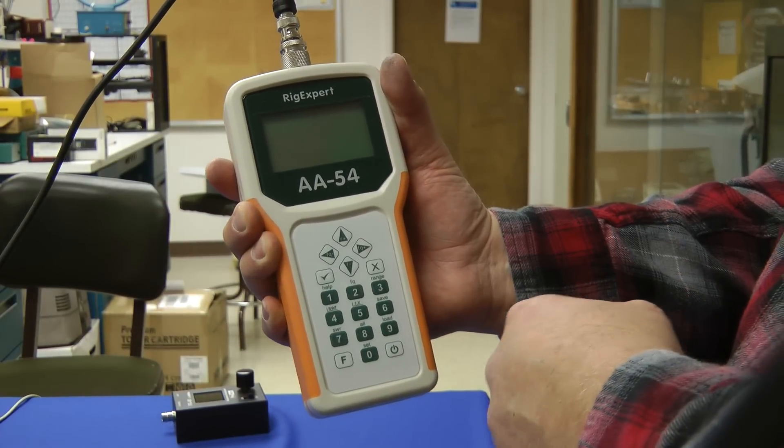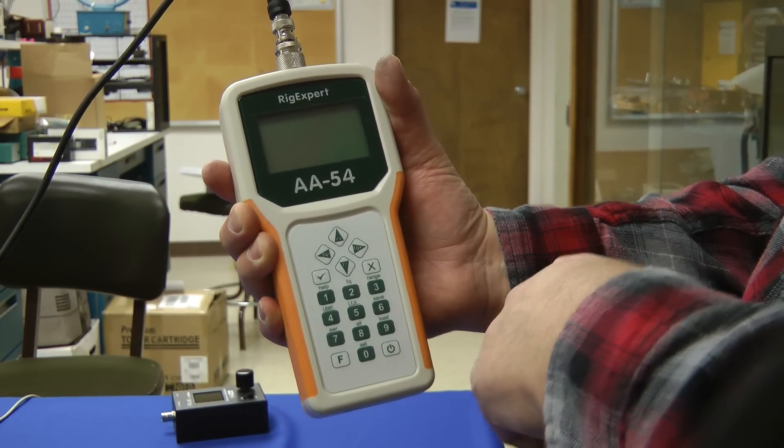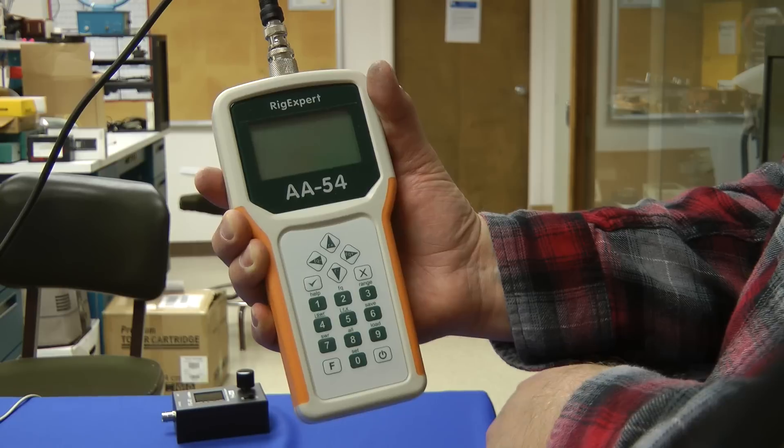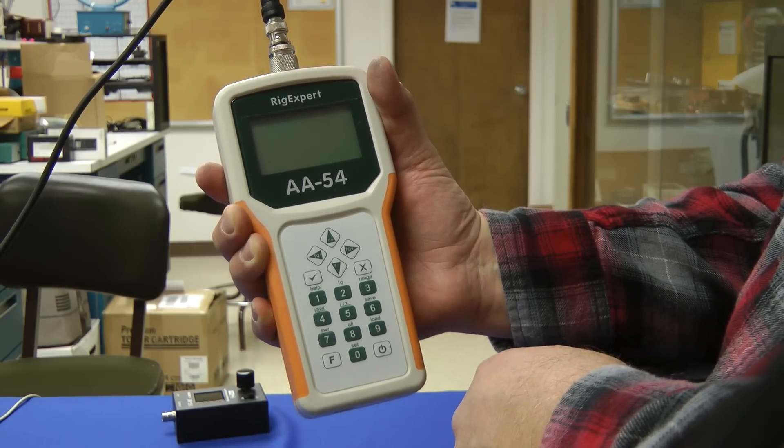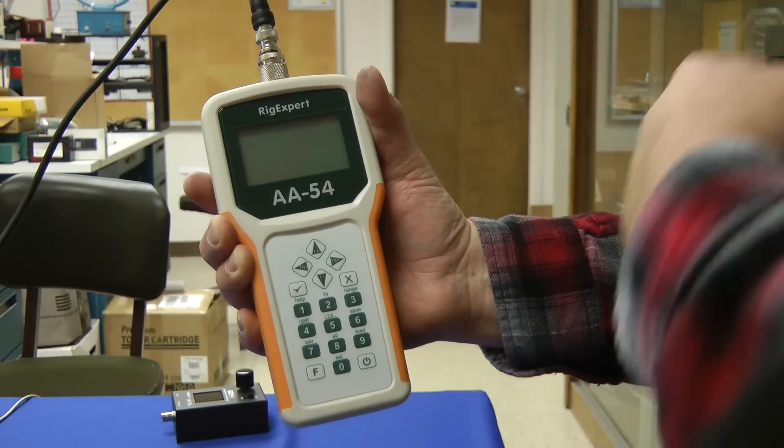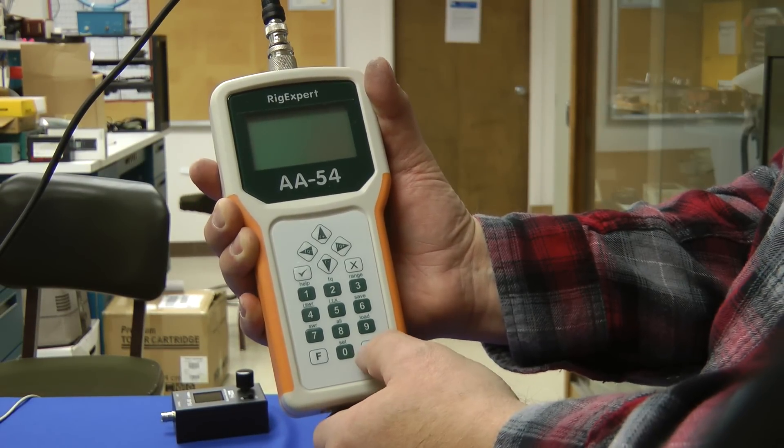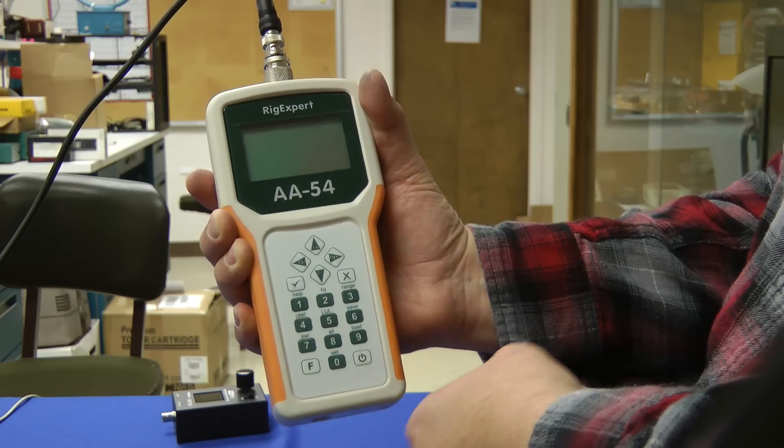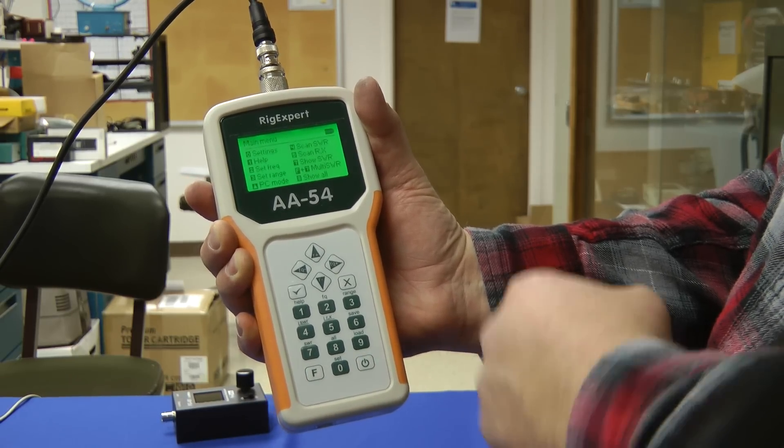Now here's the Rigexpert AA54. The manual says it covers 0.1 to 54 megahertz. I found that it works best between 1.5 and 54 megahertz. It has a plastic case, a UHF connector at the top, and a very nice menu. Here's the power button down here. Let's fire it up. Hold it down for a second. And up it comes.